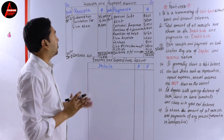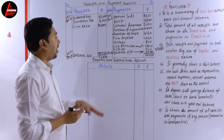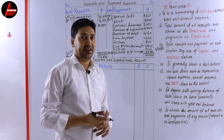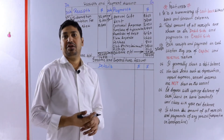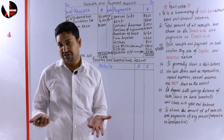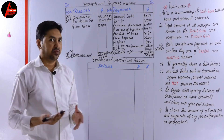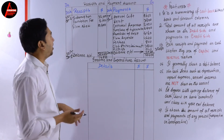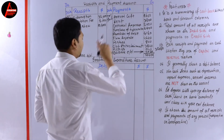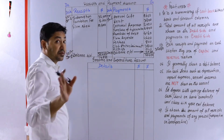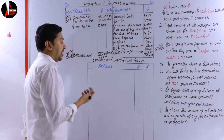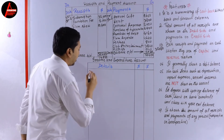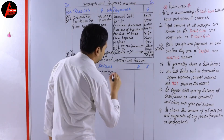This is all about the receipt and payment account. Now I will show you how to prepare the income and expenditure account from this receipt and payment account. This is a vertical format of the income and expenditure account - you can also do the horizontal format. First we will write the incomes, meaning the receipts. We have subscription: two thousand dollars. We will adjust this with the adjustments given in the question.